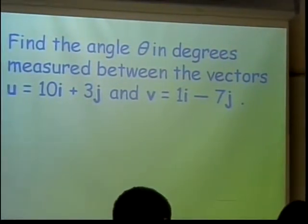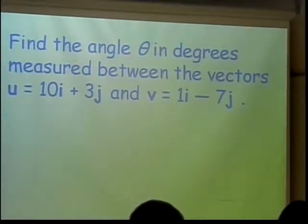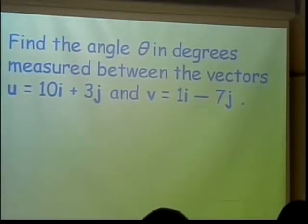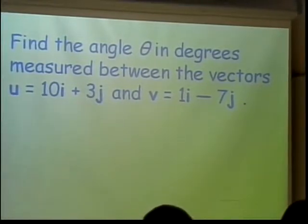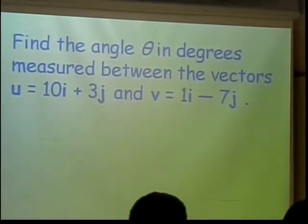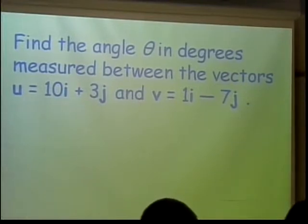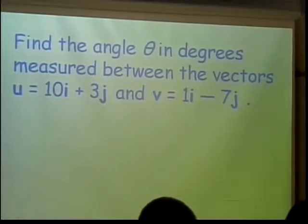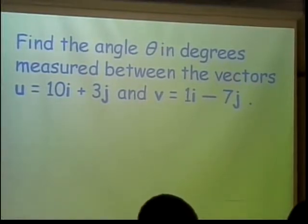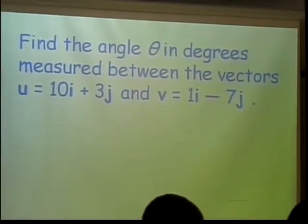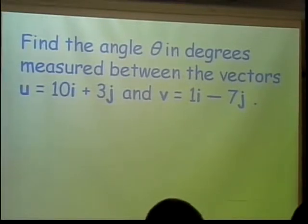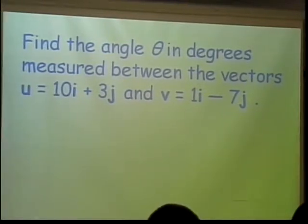We want to find the angle in degrees measured between the vectors u equals 10i plus 3j and v equals 1i minus 7j. You guys want to use the version that's on the test for finding our angle? That would probably work best, so it will give you the extra step you're going to have to remember to do.